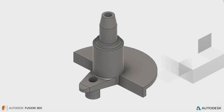Sometimes, 3D features need to be created using a construction axis, particularly when a model edge isn't available. This makes the design process much more flexible, allowing for the construction axis to control the model geometry.